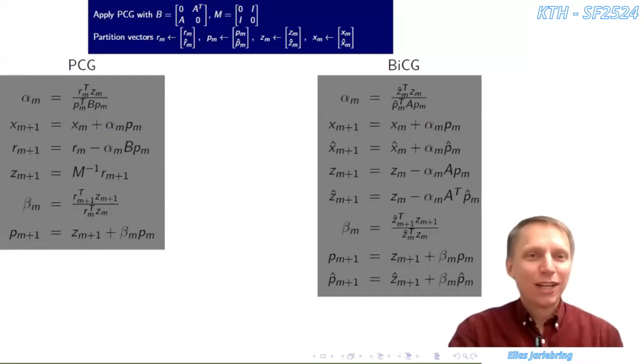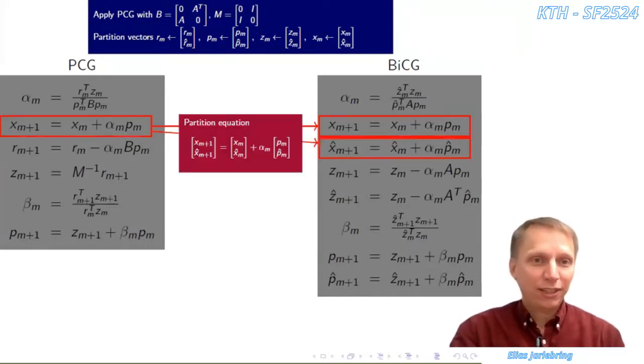Now we're going to translate each step in PCG by first partitioning the vectors. So R becomes R and R hat. This partitioning directly leads to a translation of, for example, the X update, which becomes an update in X and X hat.